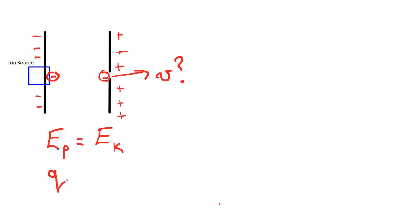We end up with a very simple formula. The electric potential energy of a charge across a potential difference is simply the value of the charge itself times the voltage across the gap. Kinetic energy, as usual, is just one-half m times the velocity squared. This simple equation allows us to figure out what the velocity is as it emerges out the hole on the right-hand side.